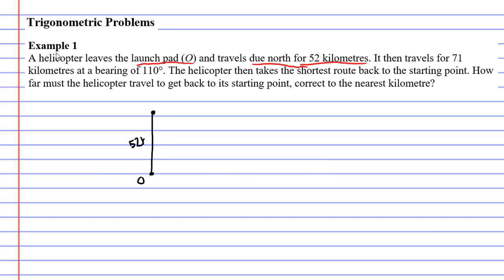It then says the helicopter travels 71 kilometers at a bearing of 110 degrees. So what we'll do here is we need a compass so we can figure out how to do a bearing of 110 degrees. Now the helicopter at this point is up here - it's traveled 52 kilometers north, so the compass needs to be such that the center is where the helicopter currently is. A bearing of 110 degrees - what is that? Remembering that we measure our angles from north, here's my north arrow that I'm coloring in.